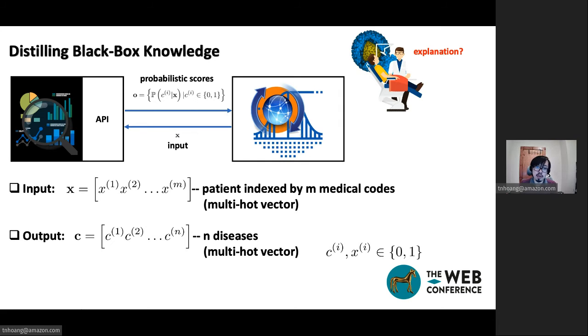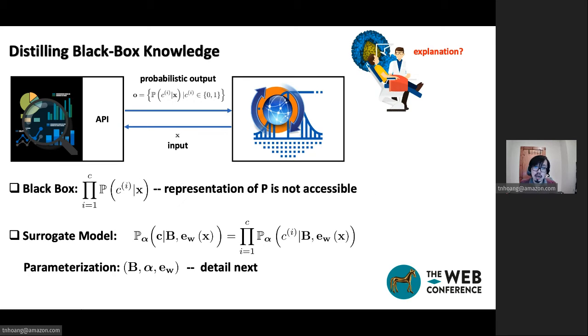For each DC, there are two outcomes, positive and negative. And so for each DC, there are two probability scores summing up to one. And based on those return probability scores, our model needs to learn a surrogate model that preserve the predictive performance of the black-box while adopting a representation that can be interpreted well by the domain expert.